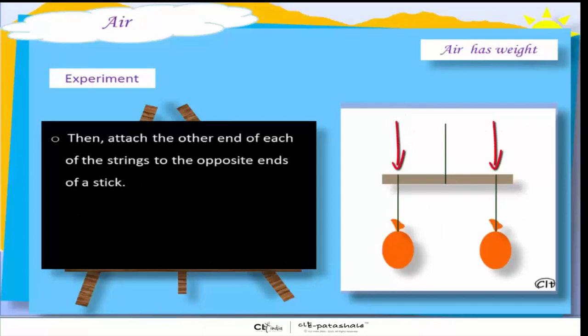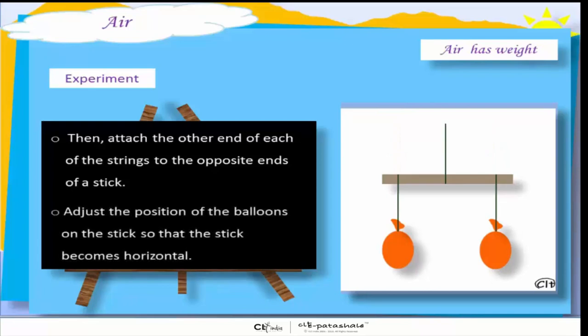Then attach the other end of each of the strings to the opposite ends of a stick. Adjust the positions of the balloons on the stick so that the stick becomes horizontal.